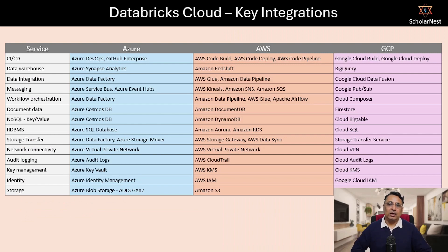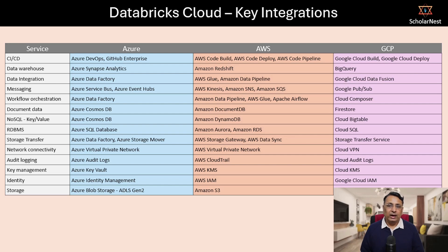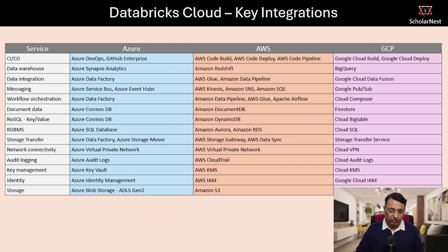The next question is where Databricks is available and which platform to choose. Databricks is available on all three major cloud platforms: Azure, AWS, and Google Cloud Platform.